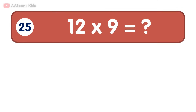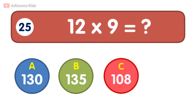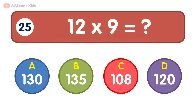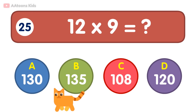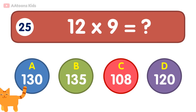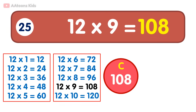12 times 9 is equal to 108. 12 times 9 is 108.